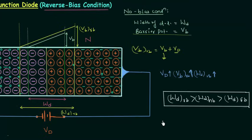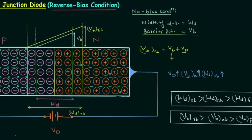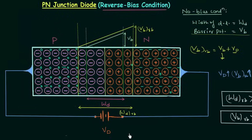If we compare the barrier potential for the three cases, the barrier potential for reverse bias condition is maximum, then no bias condition, and the barrier potential for forward bias condition is minimum. These are two important points to remember for PN junction diodes. The majority charge carriers cannot overcome the increased barrier potential. As the width of the depletion layer and barrier potential both increase, holes on the p-side and electrons on the n-side cannot cross the junction.